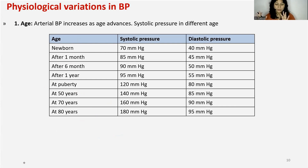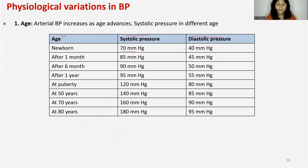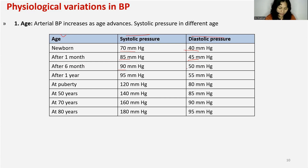Looking at systolic and diastolic blood pressure by age: a newborn has 70/40 mmHg, at one month it is 85/45 mmHg, at six months 90/50 mmHg, after one year 95/55 mmHg, at puberty 120/80 mmHg, and at age 50 and above the BP will be 140 mmHg systolic and 85 mmHg diastolic.